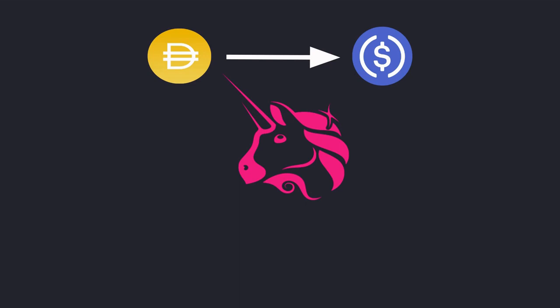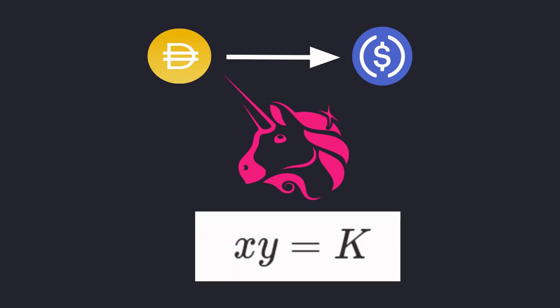If I were to trade tokens on Uniswap, for example from DAI to USDC, the amount of tokens that I would get in return is calculated by a simple equation x times y equals k.